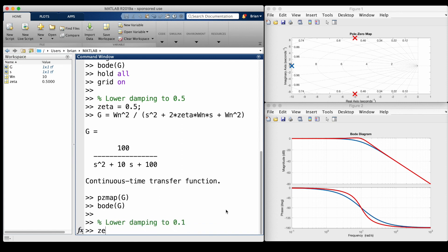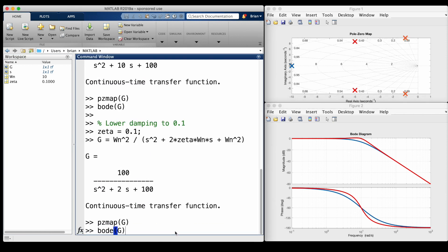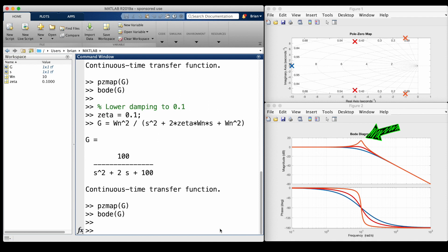Now, let's drop the damping even more to 0.1. And you can see that the peak is even higher, and it's narrower.